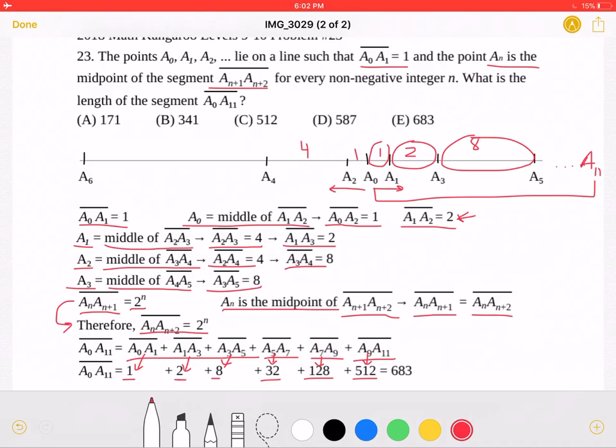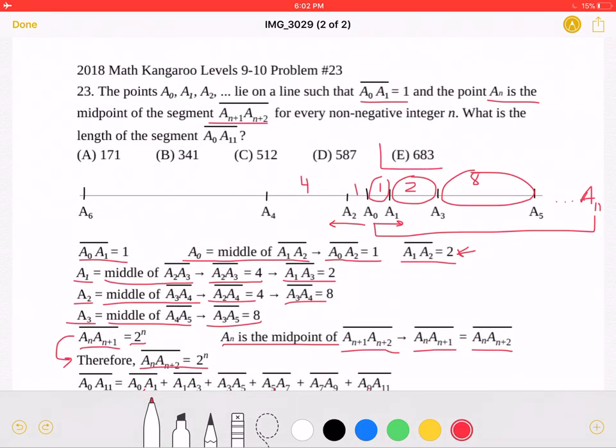So if we add all of this up, we will end up getting 683, which if we look back up, we can see is answer choice E.